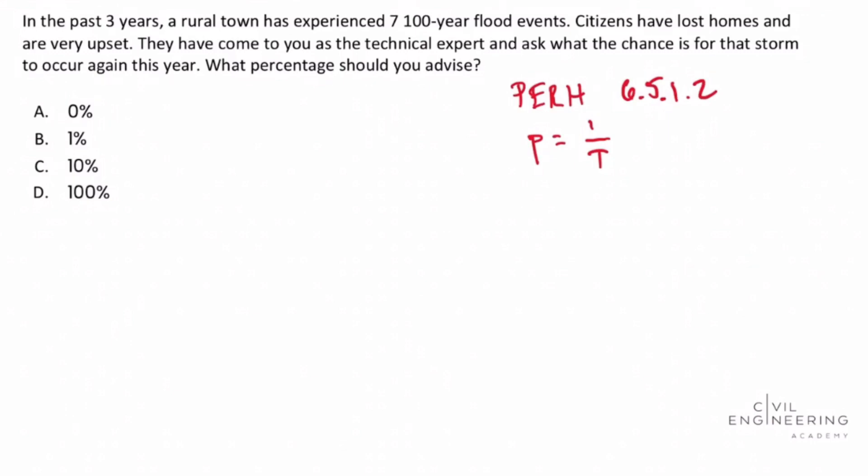We can dissect this problem, and we need to use our engineering judgment to realize that the fact that there were seven storms in the past three years is irrelevant and is not needed to solve the problem.